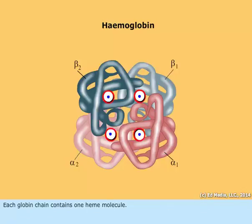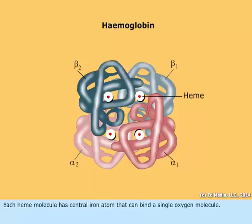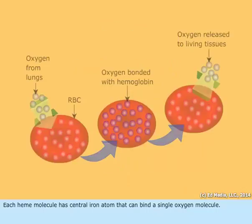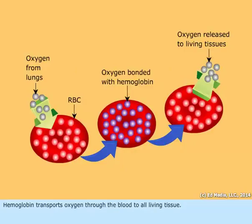Each globin chain contains one heme molecule. Each heme molecule has a central iron atom that can bind a single oxygen molecule. Hemoglobin transports oxygen through the blood to all living tissue.